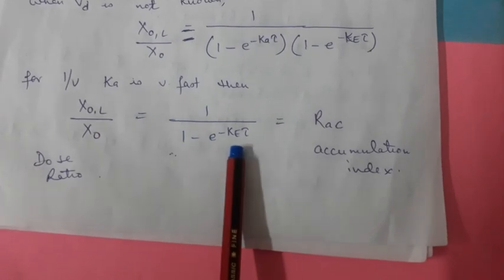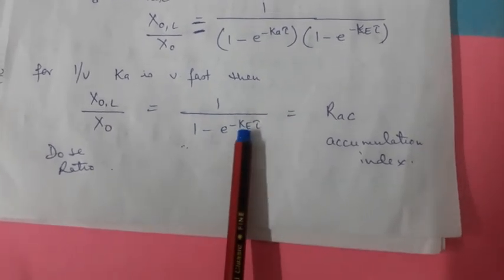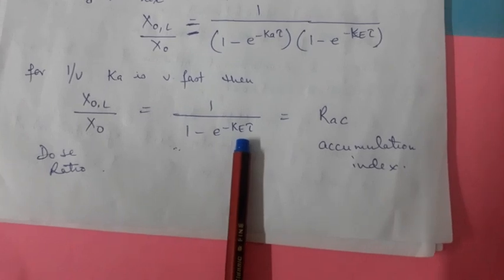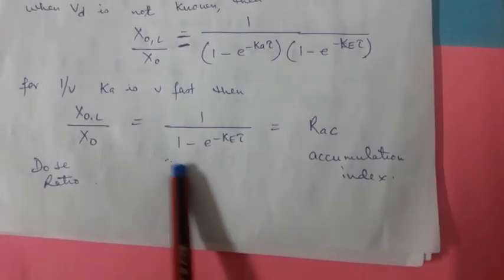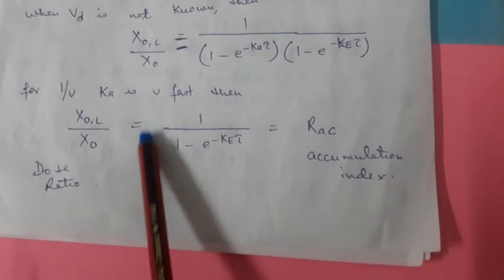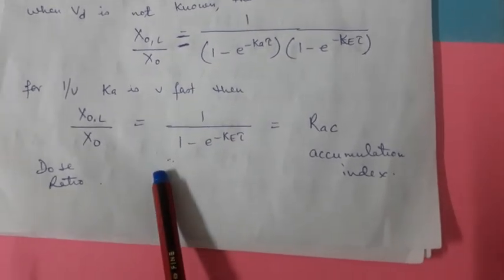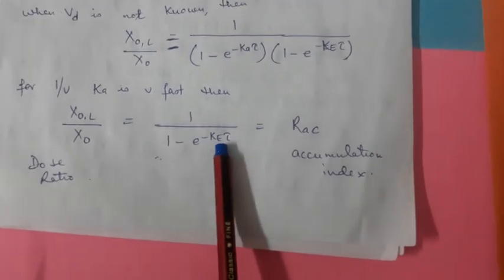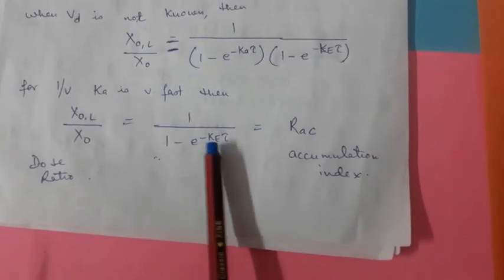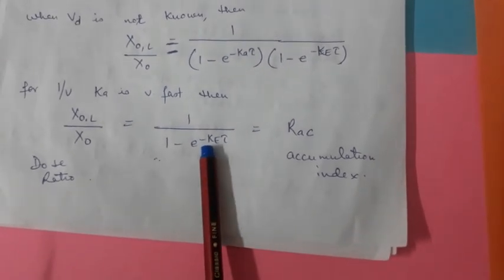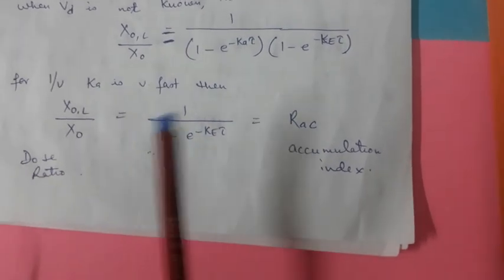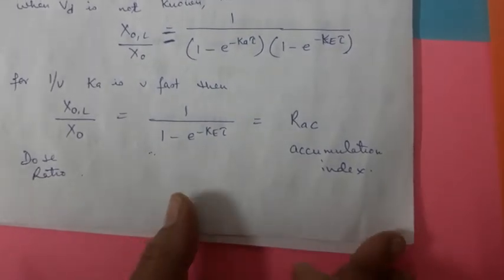Ab next mein yeh batane wali hoon ki dose ratio kya hoga. Yadi time interval jo hota hai woh drug ki t½ ke barabar hota hai, to this quantity becomes 2 - karke dekhna padega exponential ko. Aur ke ki aapko pata hai: k = 0.693 upon t½. Thik hai, ab next mein dekhte hain.